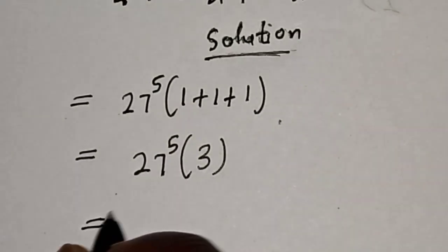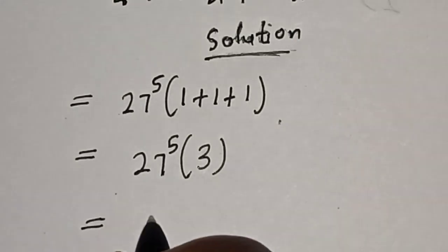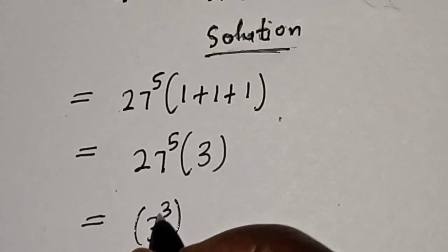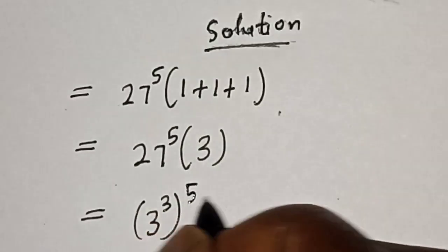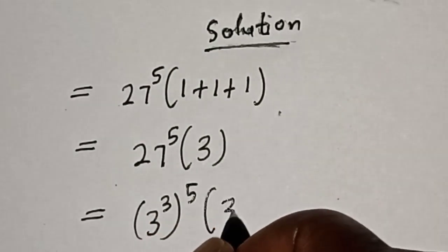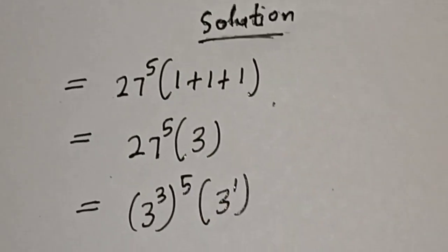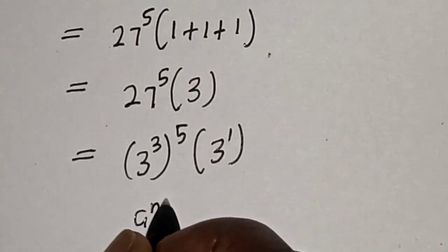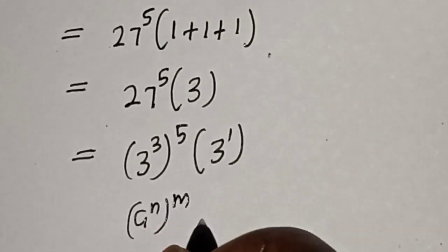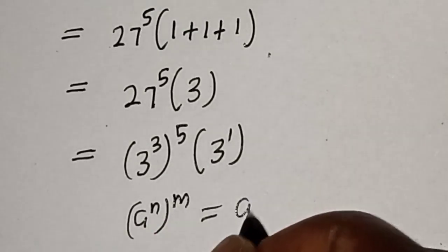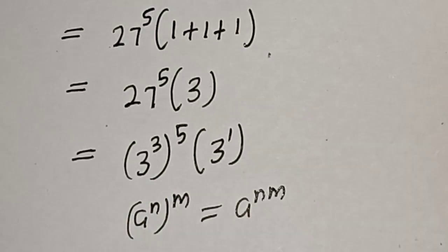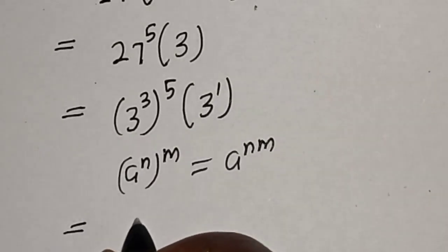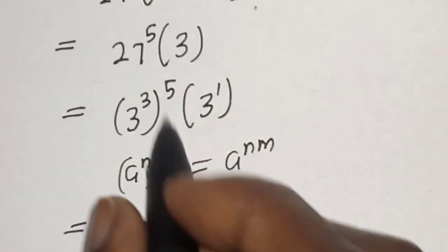So this is equal to 27 raised to power 5, which can be written as 3 raised to power 3, raised to power 5, multiplied by 3 raised to power 1. Take note of this rule: if you have a raised to power n, raised to power m, it is equal to a raised to power n×m. Then this is equal to 3 raised to power 3 times 5, which is 15.